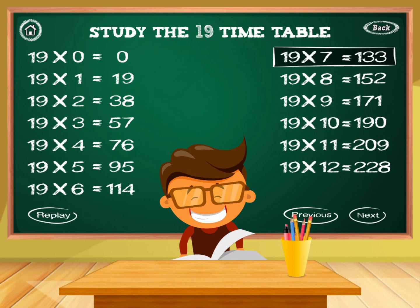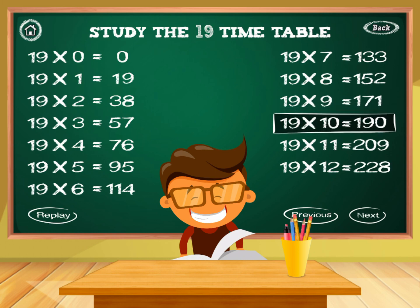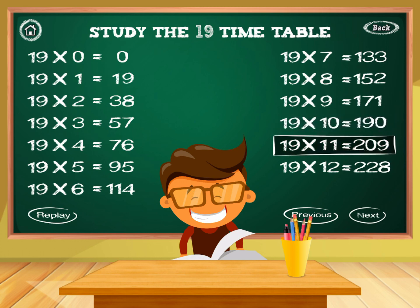19 times 7 equals 133. 19 times 8 equals 152. 19 times 9 equals 171. 19 times 10 equals 190. 19 times 11 equals 209. 19 times 12 equals 228.